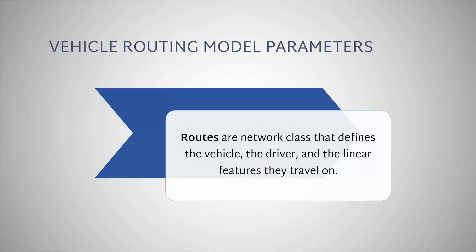Routes are often thought of as simply a specific path among many possible paths. However, in a network routing model, routes are also a class that defines the vehicle, the driver, and the linear features they travel on.